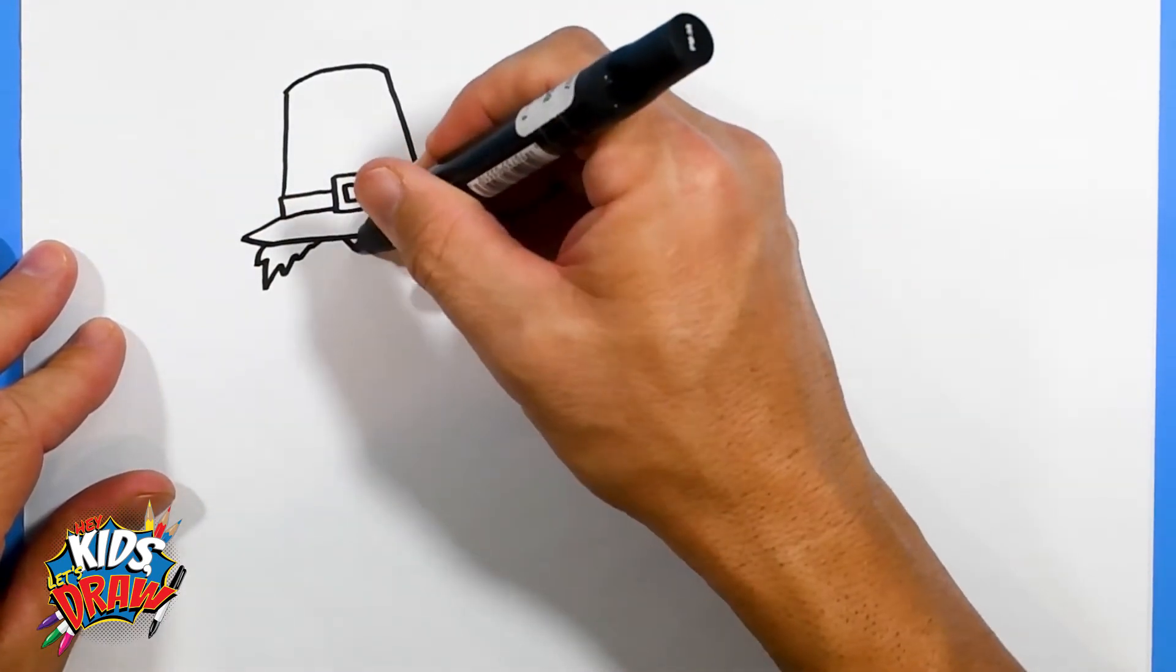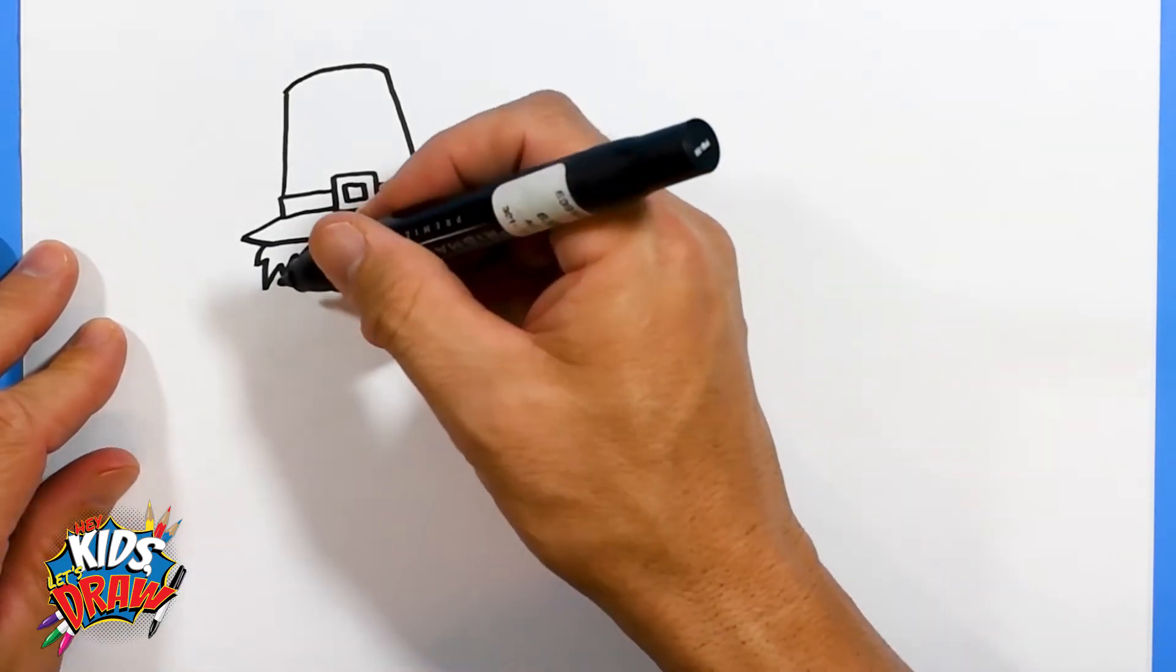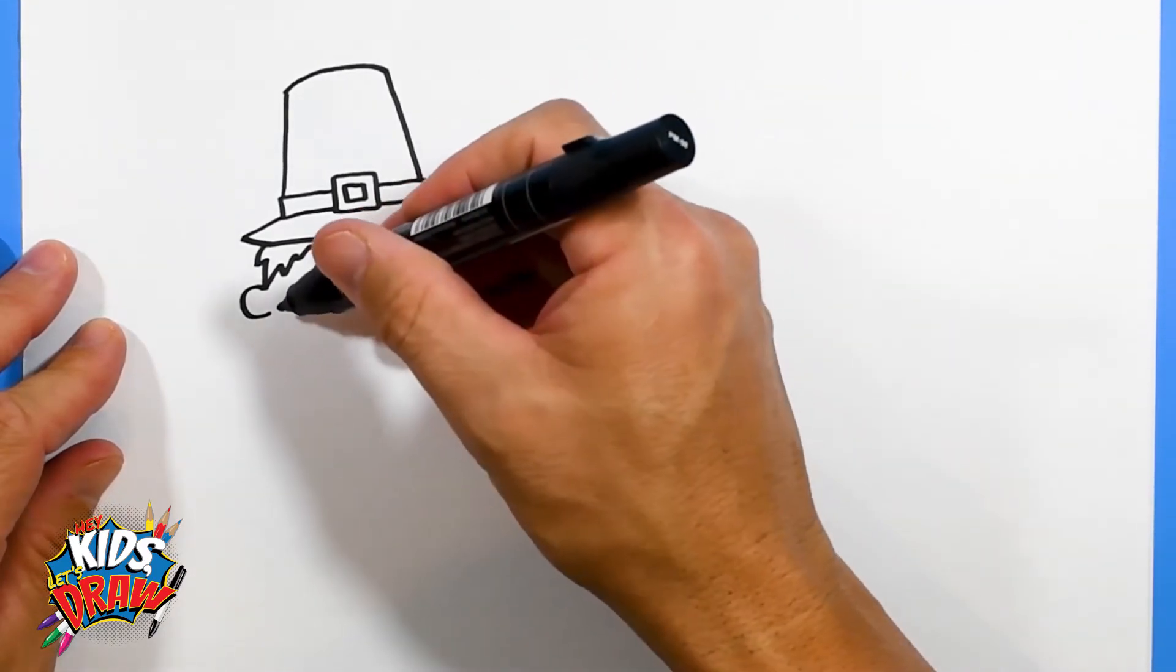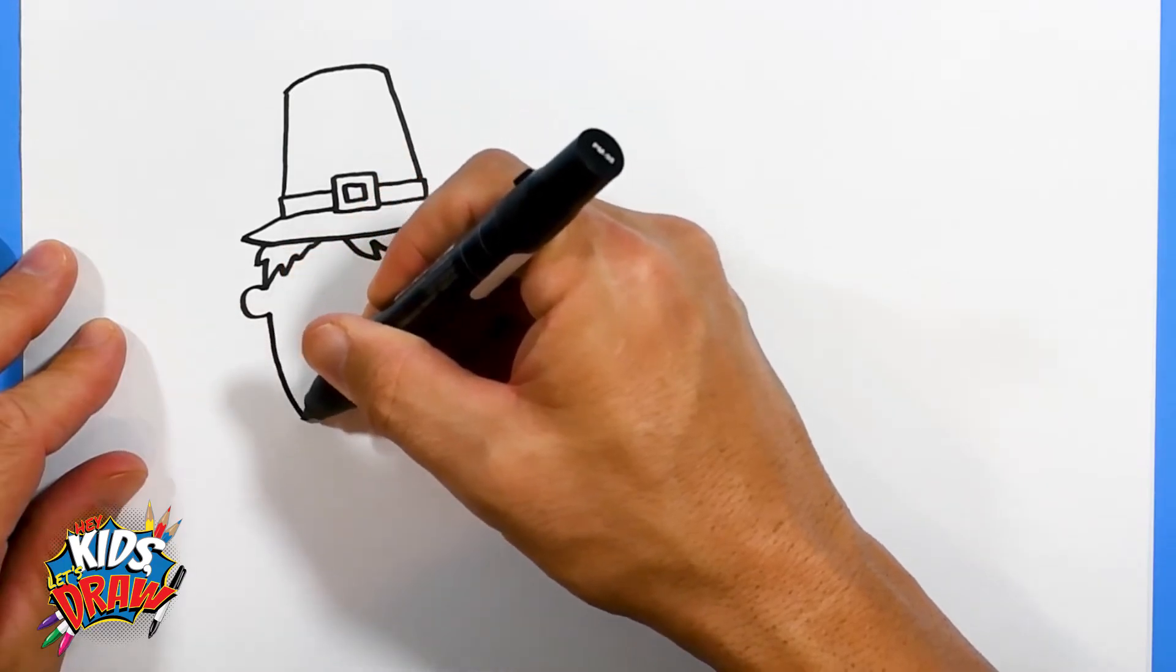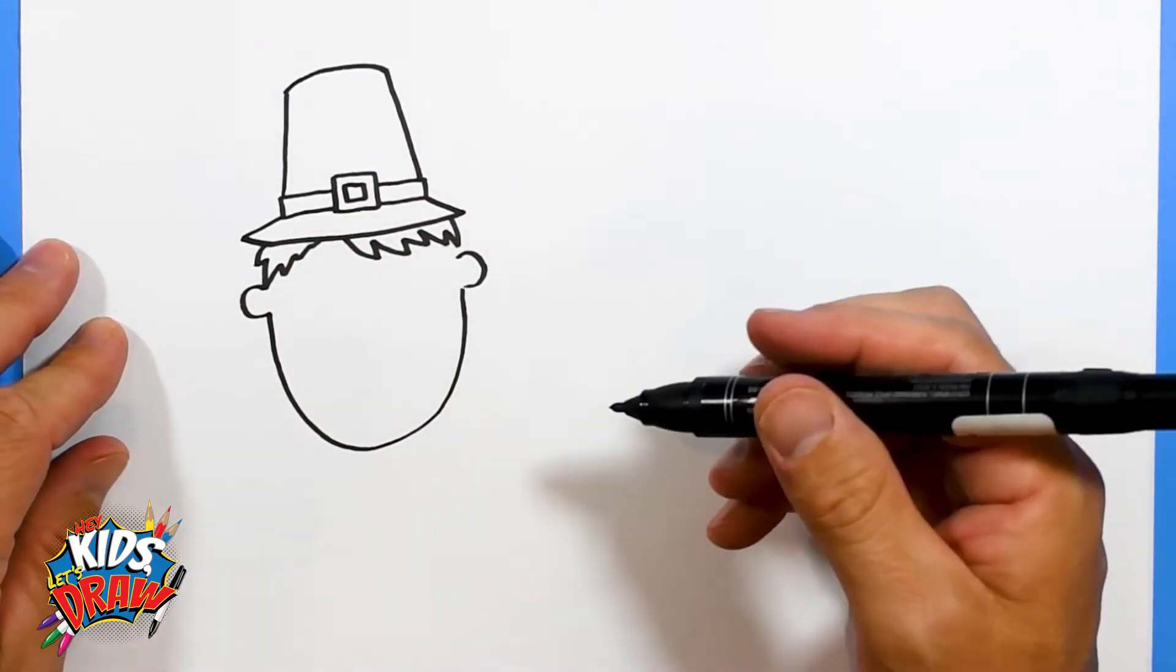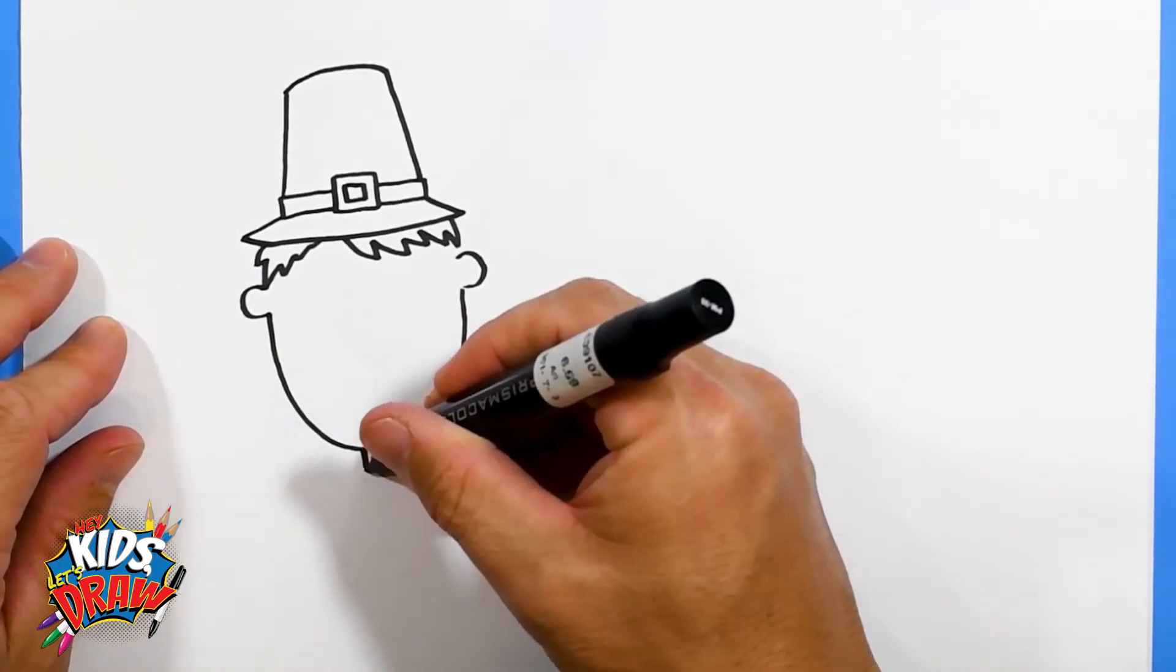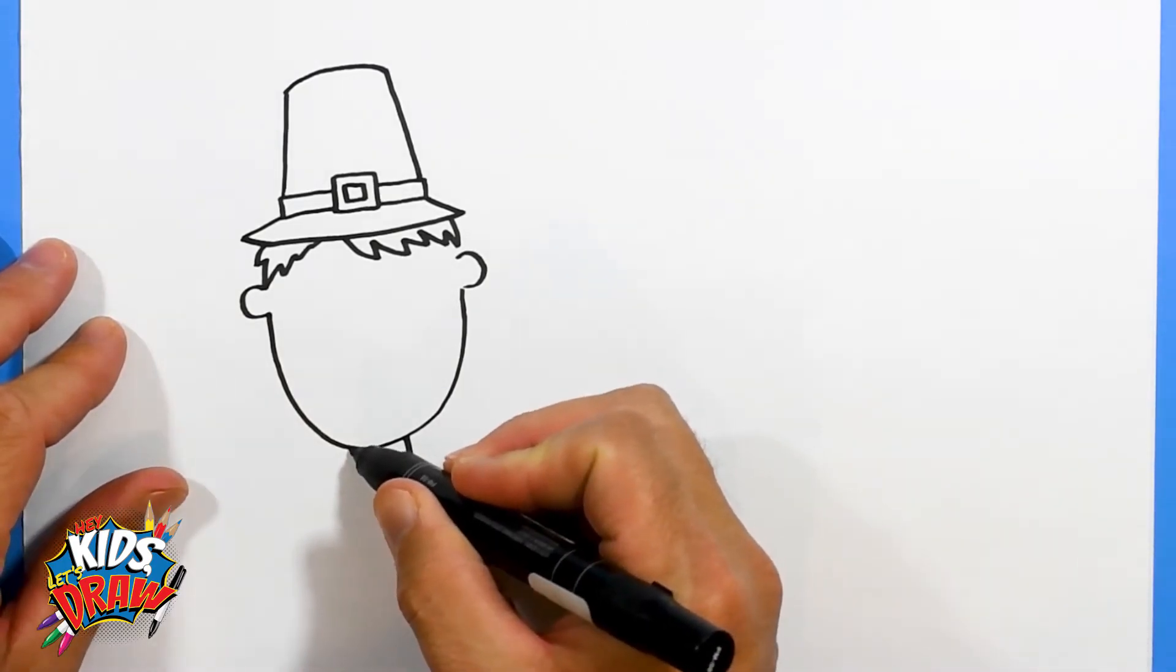Let's do a little hair that peeks out of the hat and then a fun little ear, and then the big chin. Okay, we'll do a little neck down, down, arch, and then the collar.